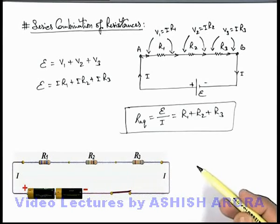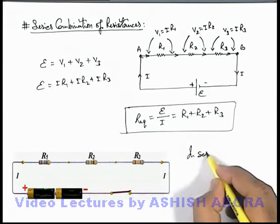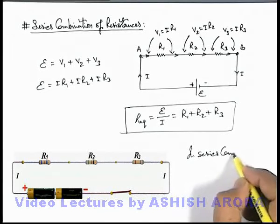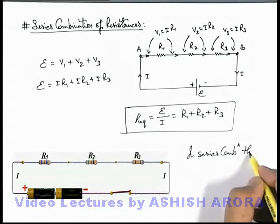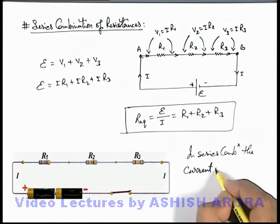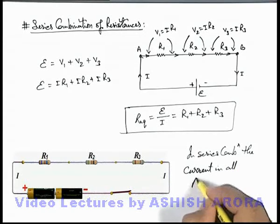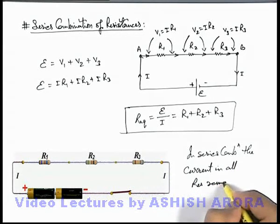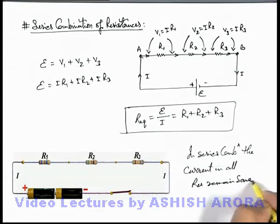So in this situation we can always write that in series combination, the current in all resistances remains same. So be careful about this note that is quite useful. And as I have already explained that even if there are many devices connected in series in a circuit, in an electrical circuit, we can say that current through all the electrical devices will remain same in series combination.